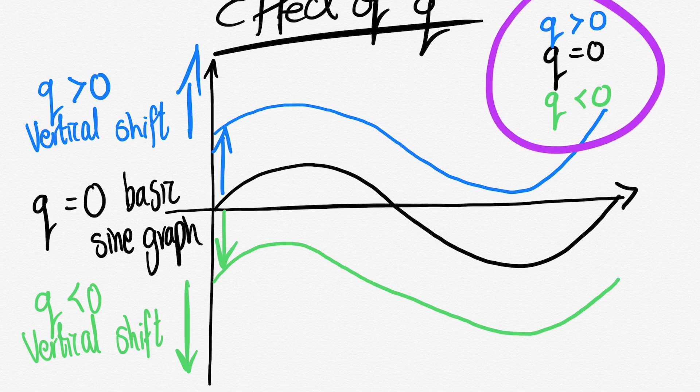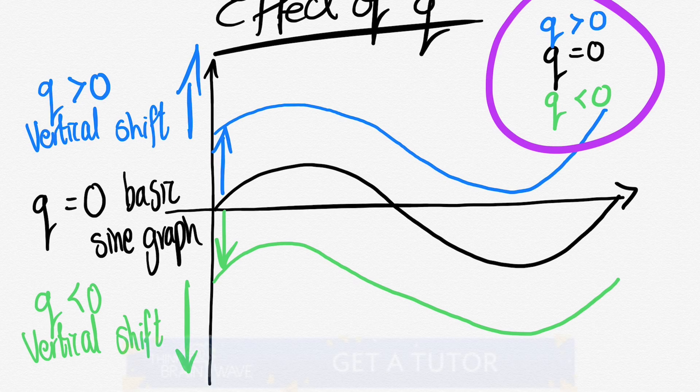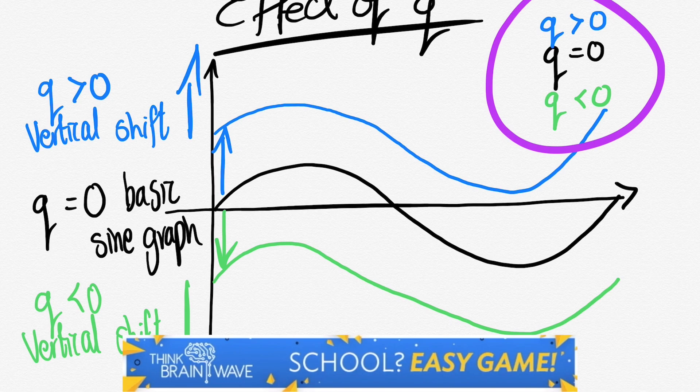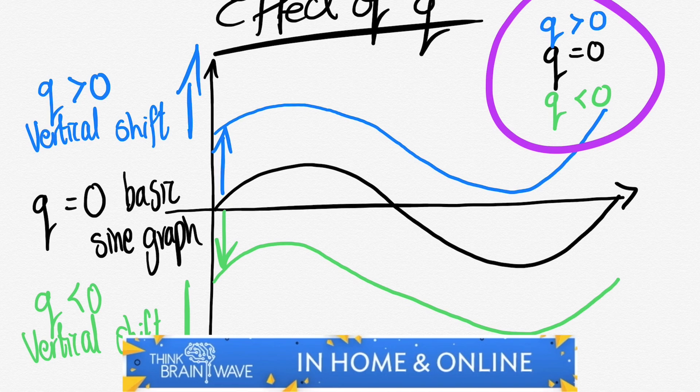So when q is greater than 0 we see an upward shift, q is equal to 0 there's no shift, and then obviously when q is less than 0 there is a downward shift. There we go, easy game.